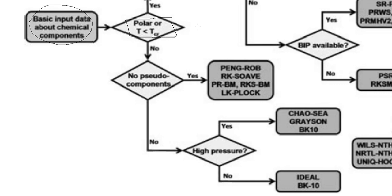Remember: if there are 10 components present and even one of them is polar, then we have to go to the 'Yes' option. Only if all the components present in the system are non-polar can we go to the 'No' option. So we will first explore what happens when we are dealing with a non-polar system, and what happens when we are dealing with a polar system.